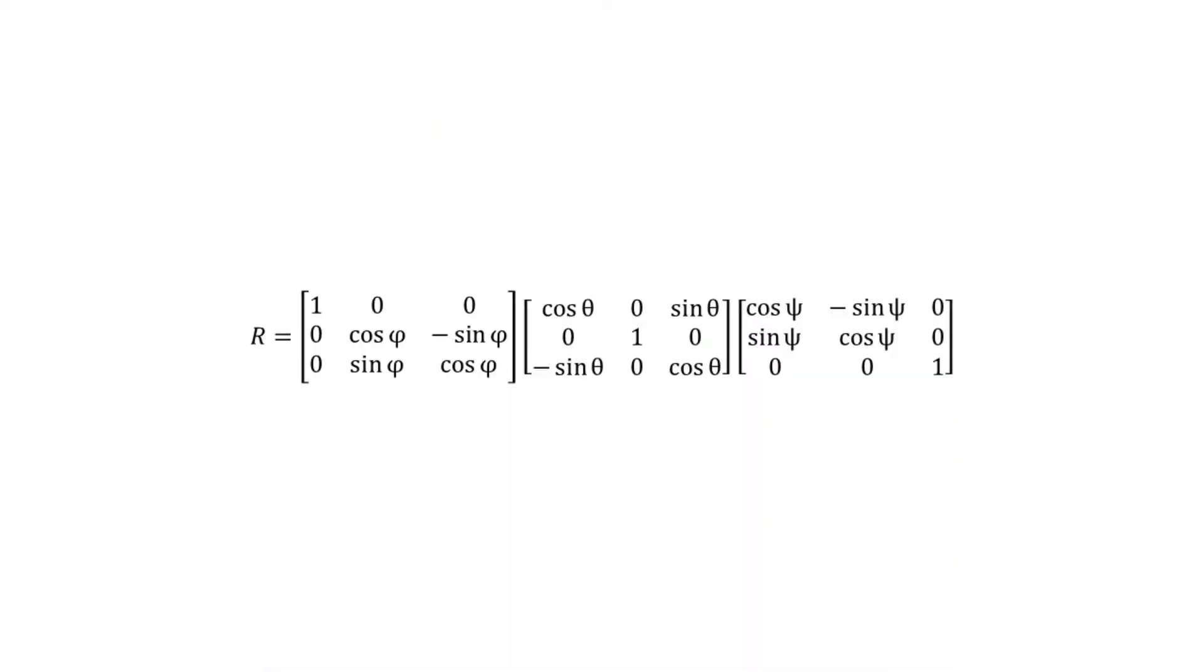If you remember rotation matrices, we can show this mathematically. This orientation happens when our second angle, theta, is at an angle of pi over 2. Plugging this into the matrix and simplifying with some trig identities.